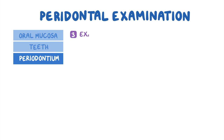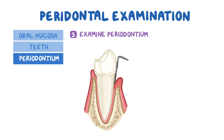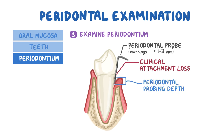Moving on to the examination of the periodontium and detection of periodontal pockets. The most accurate way to detect periodontal pockets is with a periodontal probe — a dental instrument with calibrated millimeter markings or color bands, generally representing one to three millimeters in length. The dental probe is used to measure clinical parameters including periodontal probing depth, clinical attachment loss, gingival recession, and bleeding on probing. Periodontal probing depth measures the distance from the gingival margin down to the base of the periodontal pocket or sulcus. In healthy individuals, pocket depth is one to three millimeters; greater than three millimeters is considered a periodontal pocket.